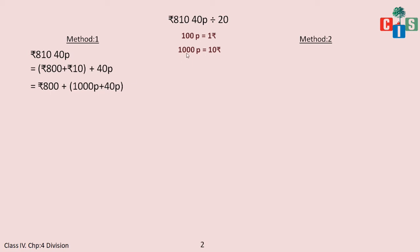Likewise, rupees 800 I have kept as it is, and rupees 10 I have converted to 1000 paisa — because 1000 paisa is equal to 10 rupees. So 10 rupees equals 1000 paisa plus 40 paisa, giving 1040 paisa. Now we will have 800 rupees and 1040 paisa. I will divide the rupees first with 20 and then divide the paisa with 20. This is the first method.